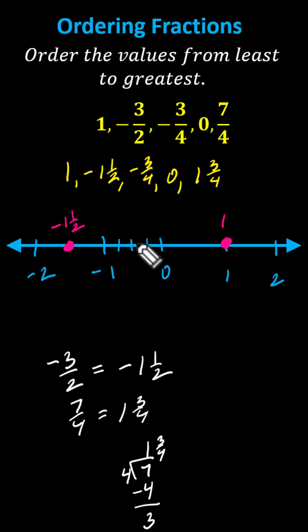We have negative 1 fourth, negative 2 fourths, and negative 3 fourths. Next, we have 0.